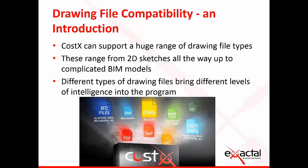Scanned images such as BMPs and JPEGs will have the least intelligence and work with what we call point mode. As the intelligence increases with PDFs and DWGs, we're able to use line mode. Above that we have BIM, where we can use object mode and run BIM import templates.